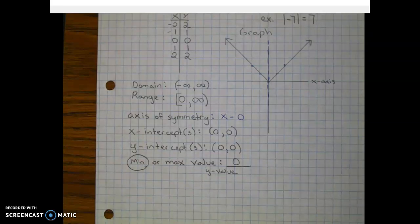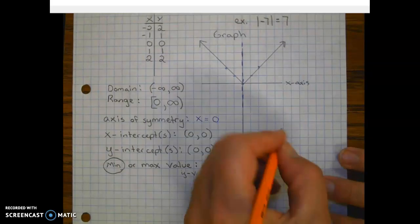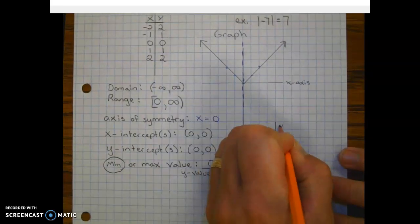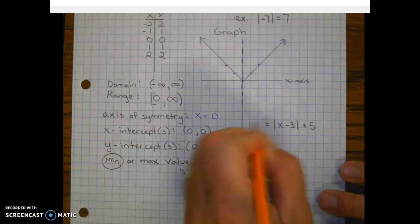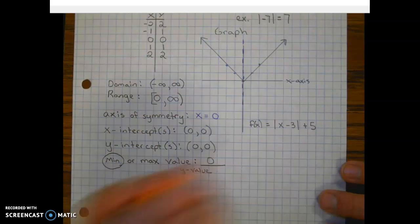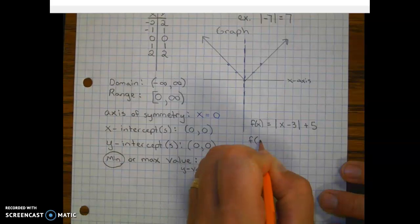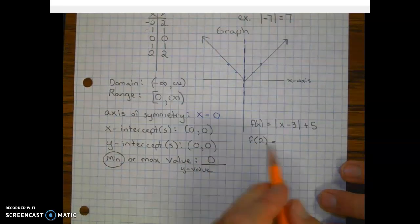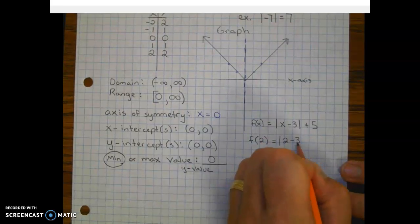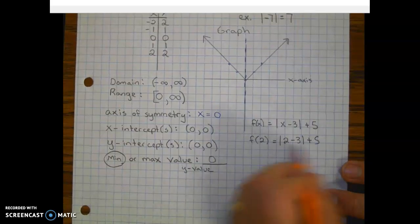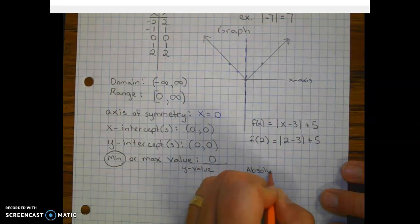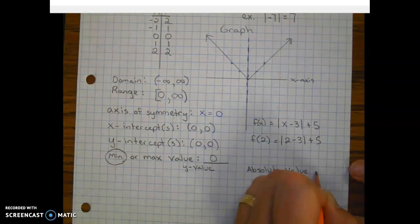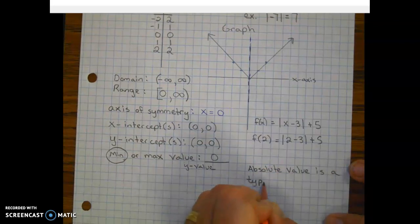I think that's going to be good for our video for tonight. One quick thing I want you guys to know is absolute value. So if I had x minus 3 plus 5, if we were going to evaluate this, let's say we were going to evaluate this function at 2, you would plug 2 in for x. And to simplify this expression over here on the right, absolute value, let's write this down, is a type of grouping symbol.